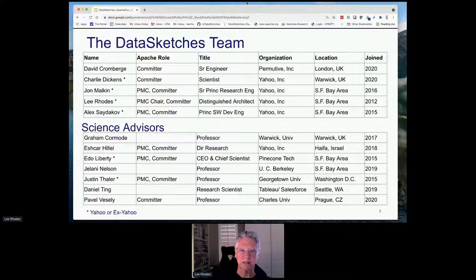It's been very successful inside Yahoo, and a number of other companies have joined. We have science advisors including Graham Cormode, one of the top scientists in streaming algorithms, Eshkar Hillel in Israel, Ido Liberty, CEO and chief scientist at Pinecone Technologies, Jelani Nelson, a professor at Berkeley, Justin Thaler, a professor at Georgetown University, Daniel Ting, a research scientist at Tableau and Salesforce, and Pavel Veasley, a professor at Charles University in Prague. This project is focused on bridging the science of sketching algorithms to practical application.